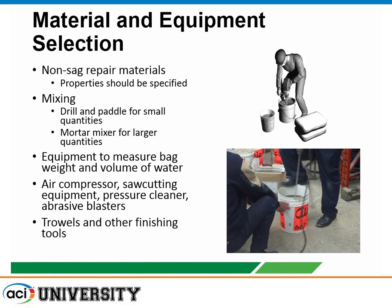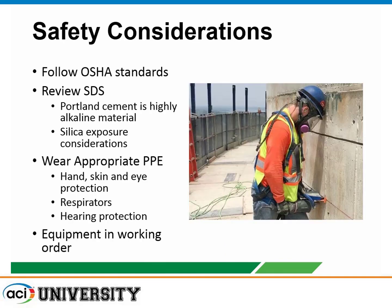For material selection and equipment: these materials are non-sag and more cohesive because you're applying to vertical and overhead surfaces. The material properties should be specified; these are generally proprietary materials with a certain rheology. Many are lightweight to allow additional build and thickness. You'll need equipment to measure water volume, check bag weights to get the right mix ratio, plus air compressors, saw cutting equipment, and trowels and finishing equipment to achieve the desired surface appearance.